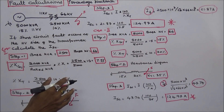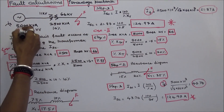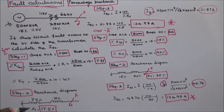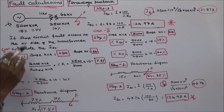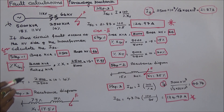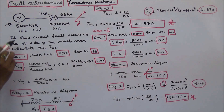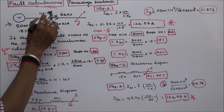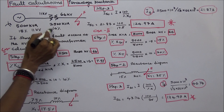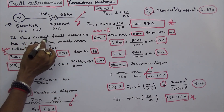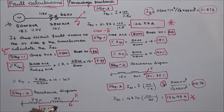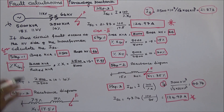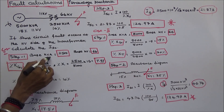This problem covers the single line diagram of a power system. The system consists of a generator and a transformer. Generator rating is 5000 kVA, 11 kV, 15% sub-transient reactance, star connected. Transformer rating is 2500 kVA, 11 kV / 66 kV, reactance 10%. If a short circuit fault occurs at the high voltage side of the transformer, calculate the short circuit current ISC. For Case 1, we choose base kVA equal to 2500.